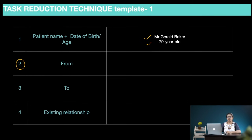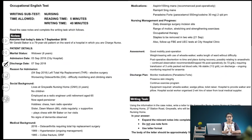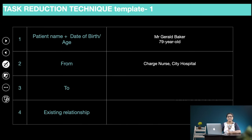The second bit of information we need is 'from' — that is, who are we, from whom is the letter being written? We look at the case note and pick out our job role, which says charge nurse. And in the patient details, the admission date says 3rd September 2018, City Hospital — which means I'm a charge nurse at City Hospital. So we fill in the second point on the template: charge nurse, City Hospital.